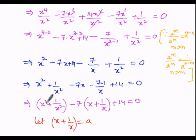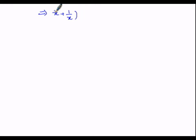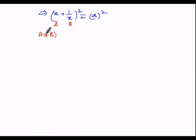Let x plus 1 by x equal a. We need x square plus 1 by x square. So squaring on both sides — because the exponent is 1 but we need exponent 2 — squaring both sides: x plus 1 by x whole square equals a whole square. This is in the form of a plus b whole square, and the identity is a plus b whole square expanded as a square plus 2ab plus b square.